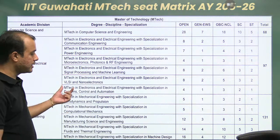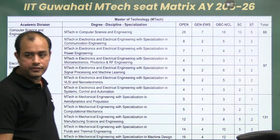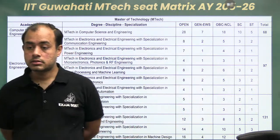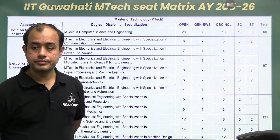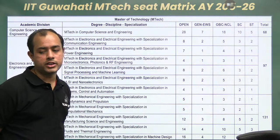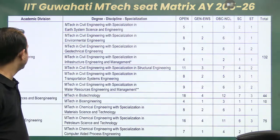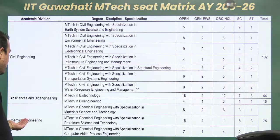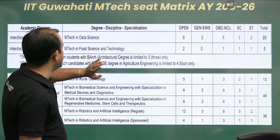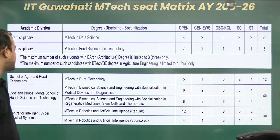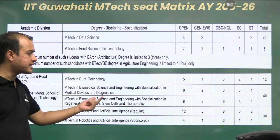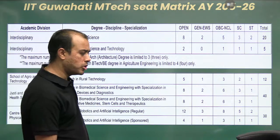VLSI Nano Electronics has 20 seats. System Control and Automation has 11 seats, so around 15 to 20 seats are there for each branch. Biomedical has 40 seats. Robotics and AI has 30 seats — an upcoming field where all three branches, Electrical, EC, and Instrumentation, can apply.